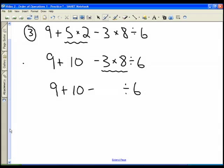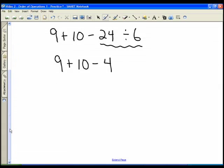Now I still have one more division to do here. I have 9 plus 10 minus, and 24 divided by 6 is 4. So now I just have additions and subtractions left. 9 plus 10 is 19, and minus 4.